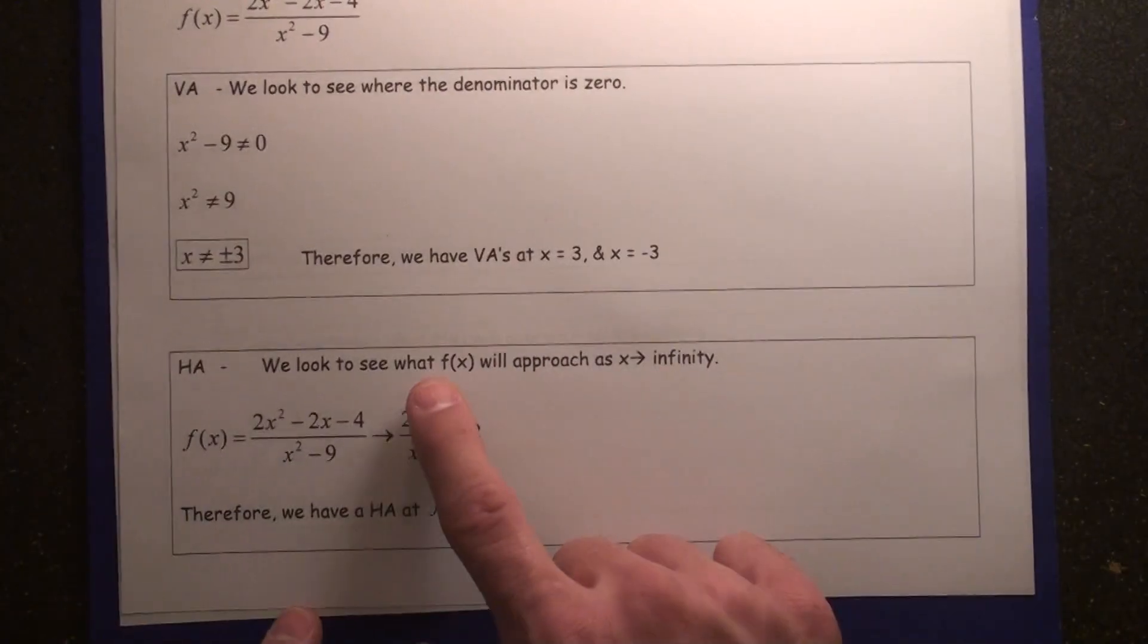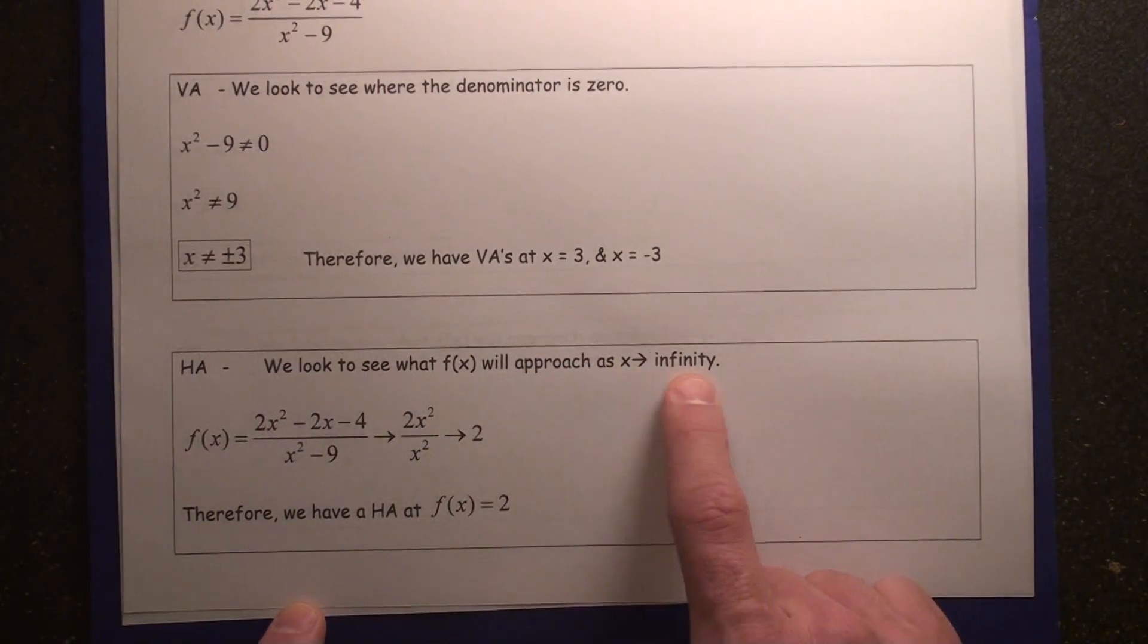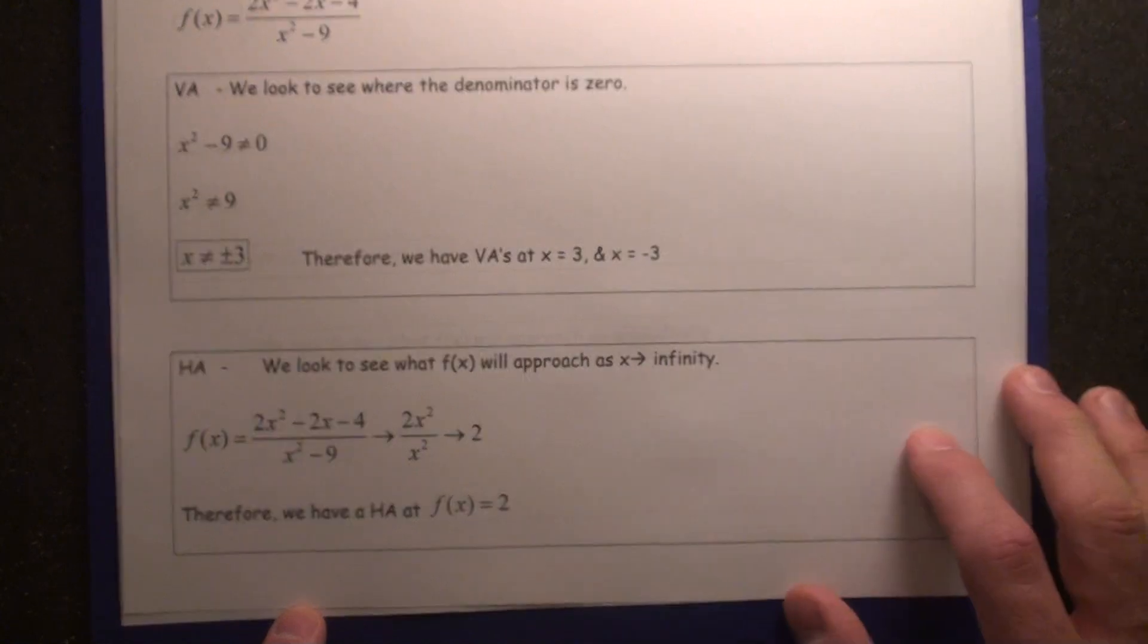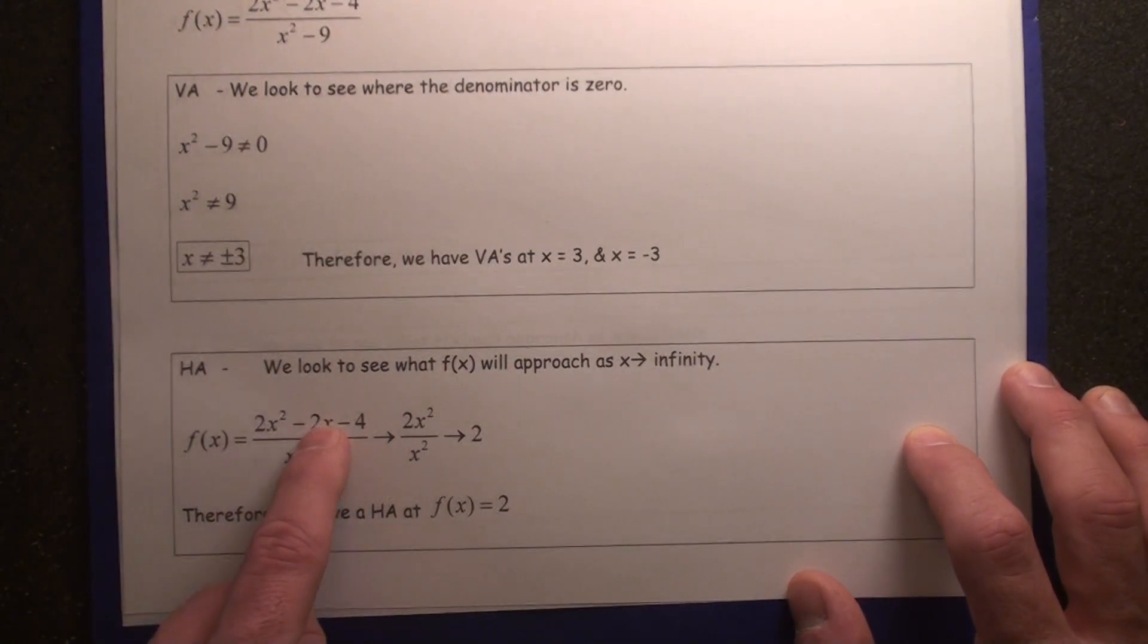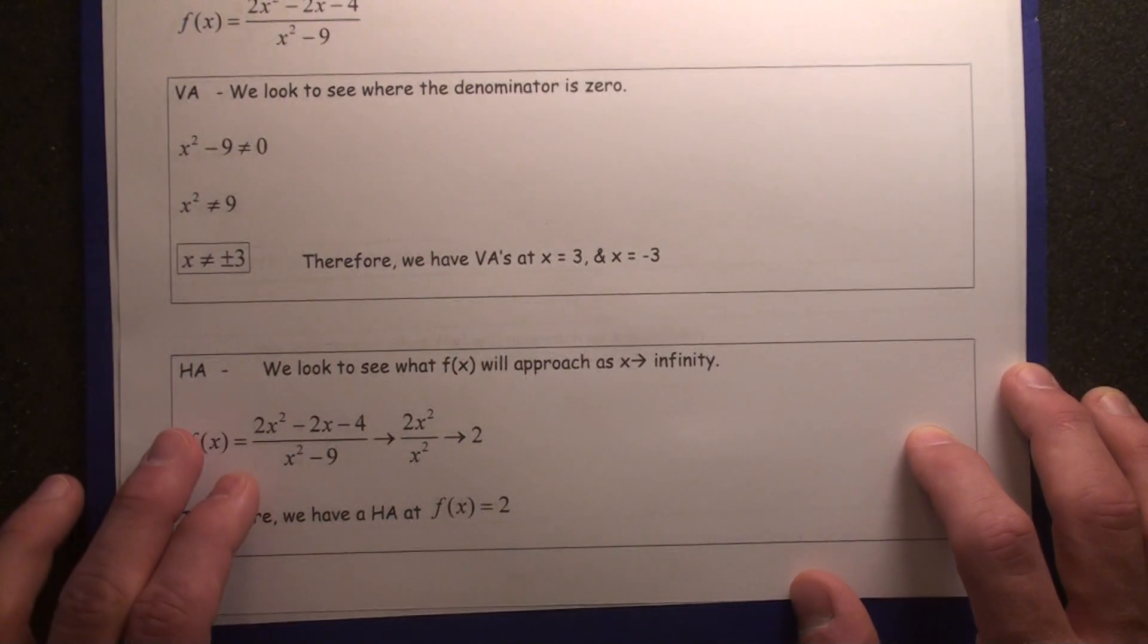Horizontal asymptotes. We look to see what f of x will approach as x approaches infinity. So as x gets larger in f of x, the 4 and the 2x and the 9 become virtually insignificant.